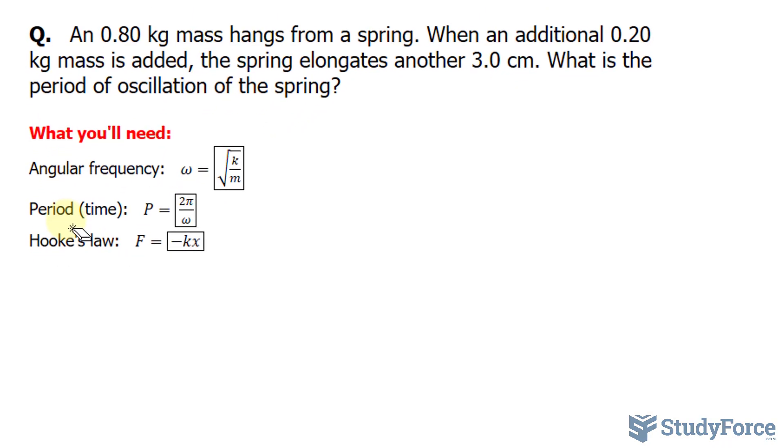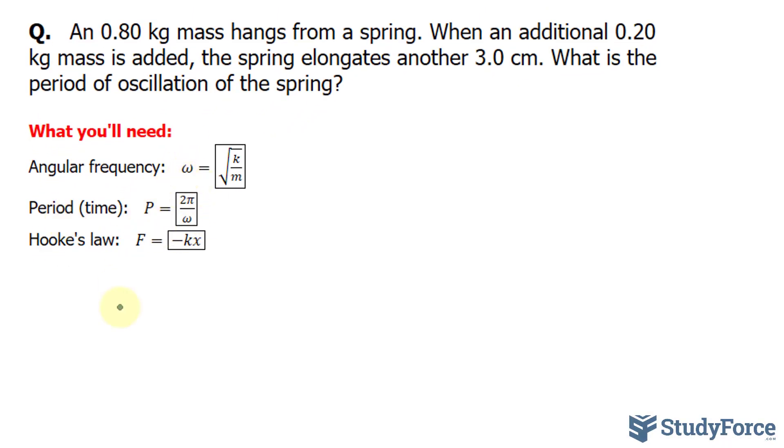In order for us to find the period, we need to use the following formula, where p is equal to 2 pi over omega, which represents the angular frequency. The angular frequency is found by taking the square root of k over m, k being the spring constant, which we don't have, and m being the mass.